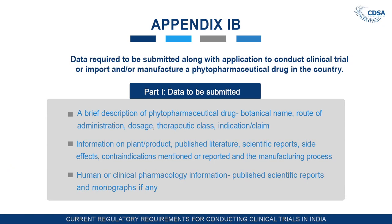Appendix 1B is divided into two parts. Part 1 consists of data to be submitted by the applicant, including a brief description of the phytopharmaceutical drug such as its botanical name, route of administration, dosage, therapeutic class, indication, and claim. Then information on the plant, product, published literature if available, scientific reports, side effects, contraindications, and any reported manufacturing process — all this must be submitted.